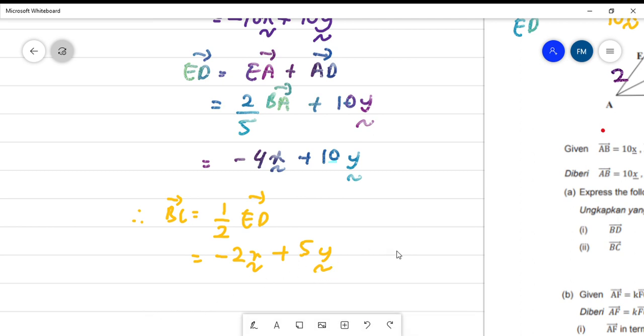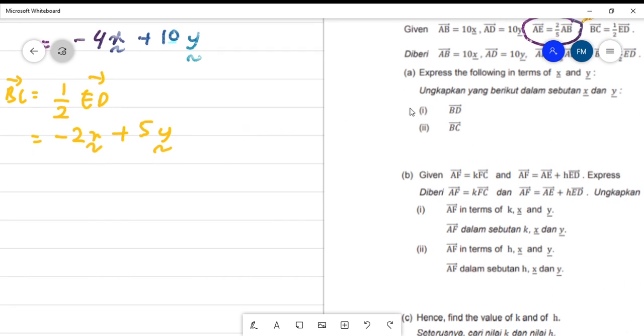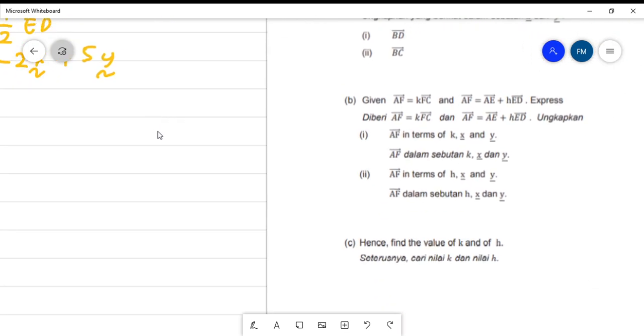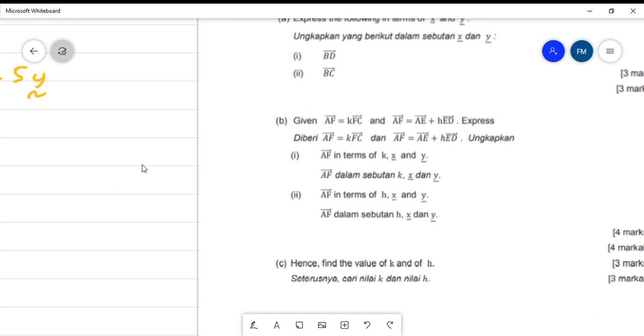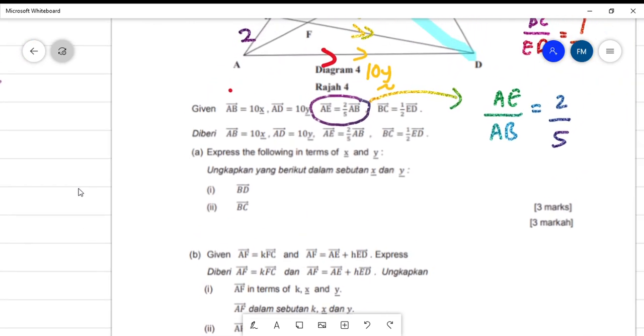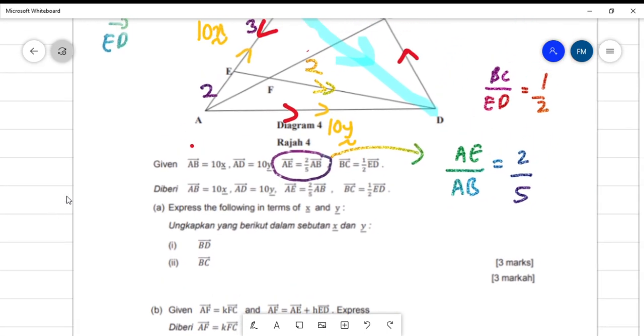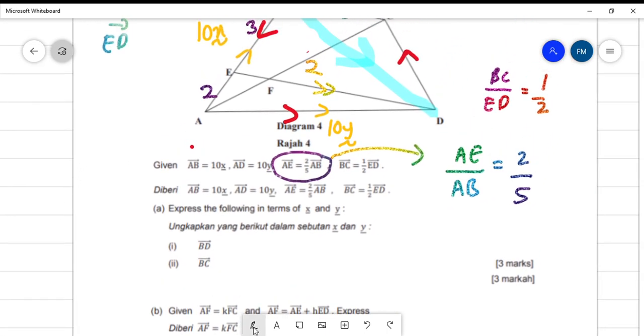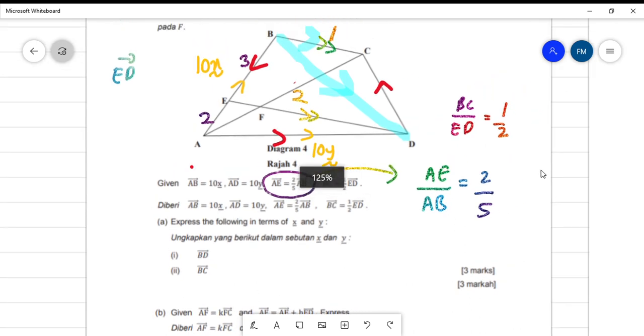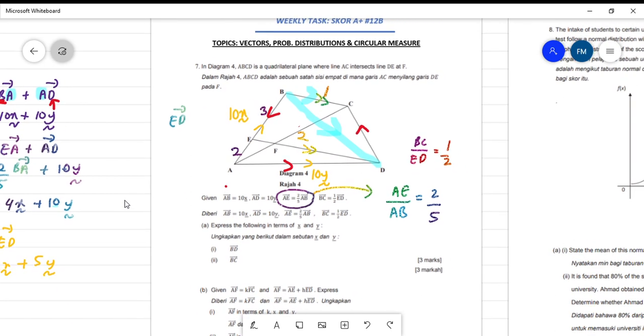Question B. Question B, we will proceed. Look at question B, given that AF equal to KFC. AF is equal to K, FC. Look at AF. Add more information.